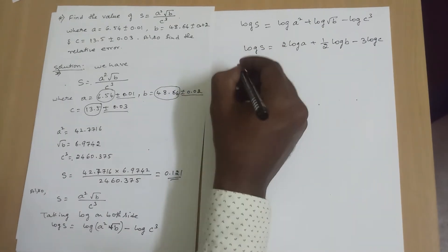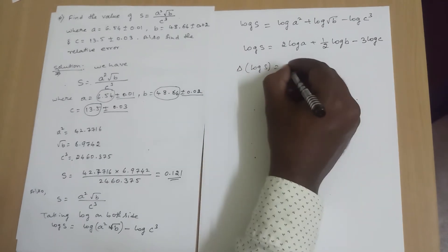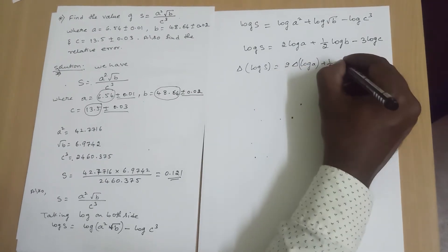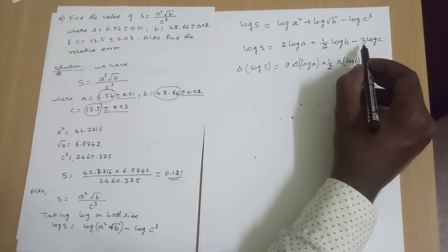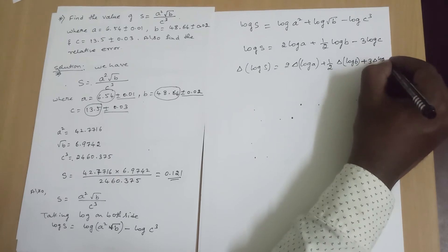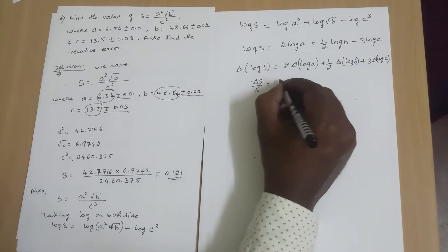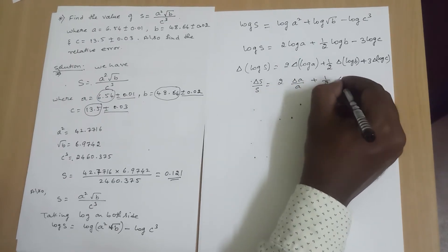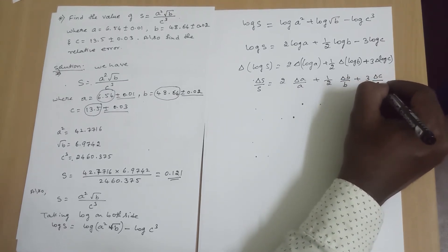Applying delta on both sides, delta log S equals 2 times delta log A plus 1/2 times delta log B plus 3 times delta log C — the minus becomes plus because we take relative error always as maximum. This gives delta S divided by S equals 2 times delta A over A plus 1/2 times delta B over B plus 3 times delta C over C.